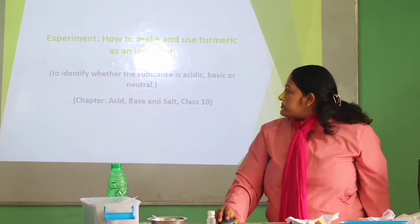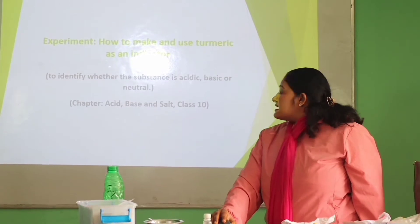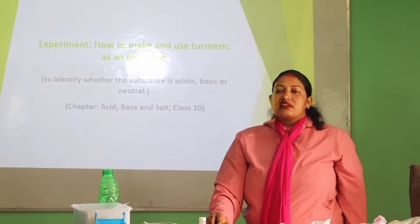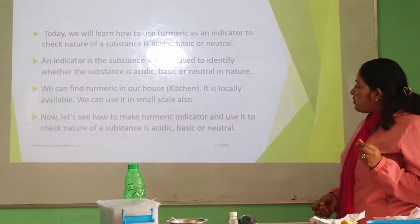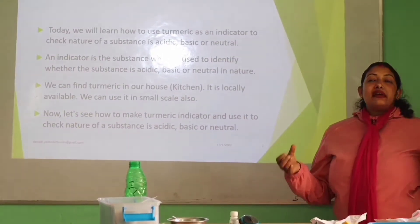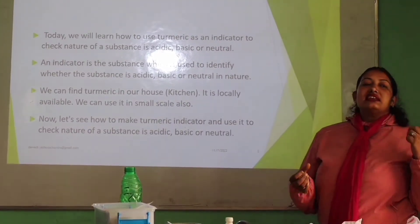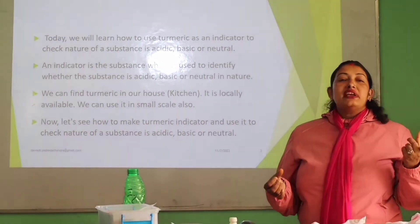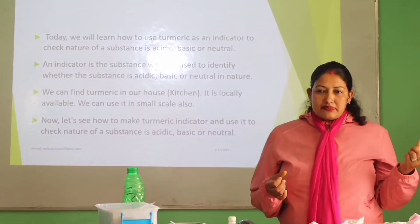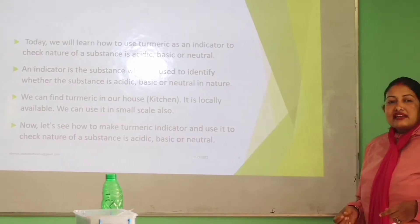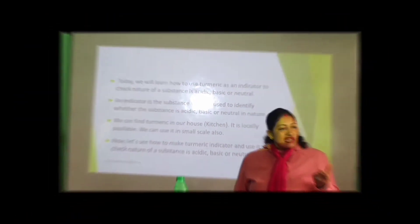An indicator is a substance used to identify whether a substance is acidic, basic, or neutral in nature. We can find turmeric in our house — it is a locally available material. We can use turmeric on a small scale, and so we are using it as an indicator for today's experiment. Let's see how to make a turmeric indicator and use it to test the nature of a substance.